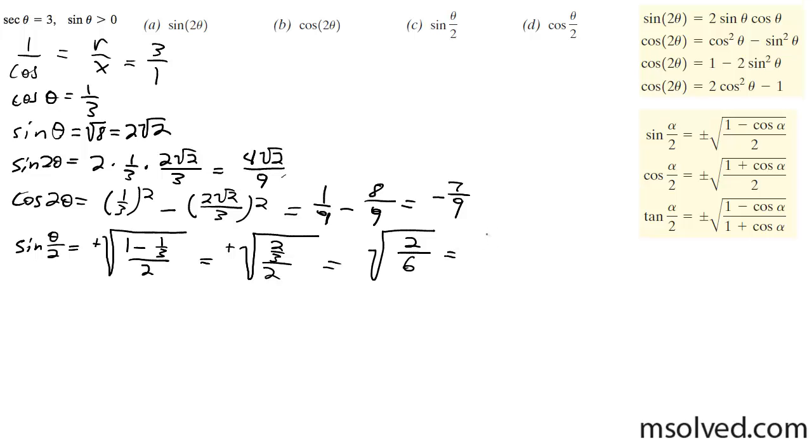which is 1 third. So plus or minus square root of 1 third, and you can carry this out further. You can make this just square root of 3 over 3 by getting rid of the radical on the bottom.